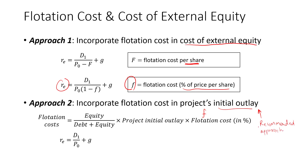Why don't we use the recommended approach? Why do people tend to use approach 1? It's difficult to identify specific project financing — in other words, it's hard to pinpoint how much equity is going to be raised specifically for each project, especially when the company has many projects. Hence why approach 1 is more convenient.